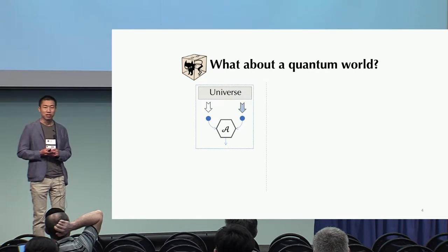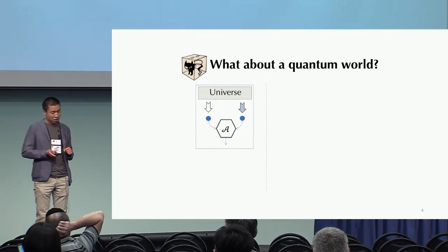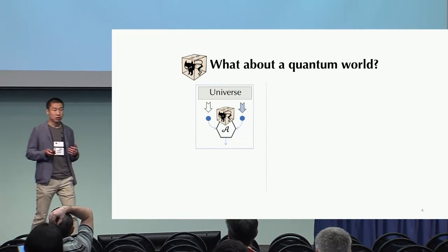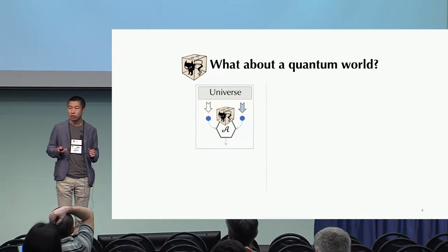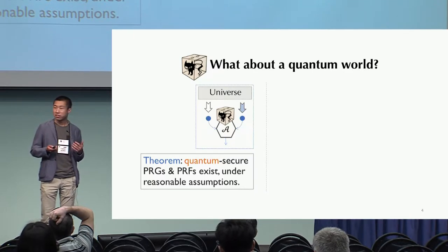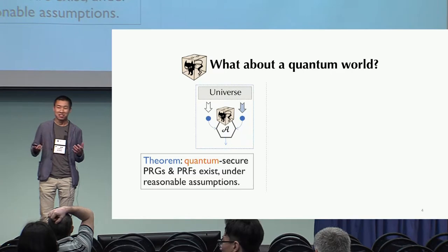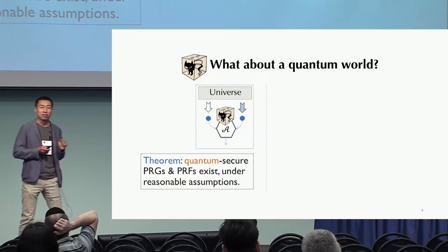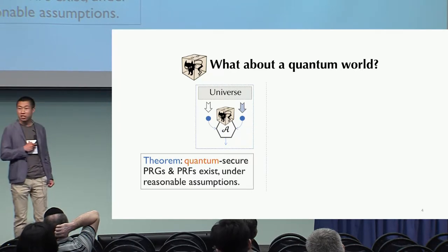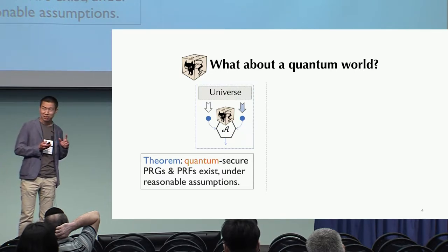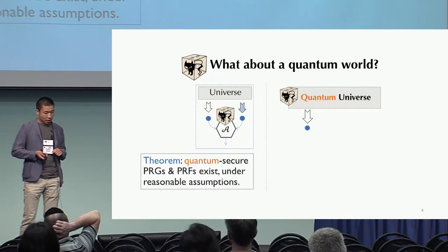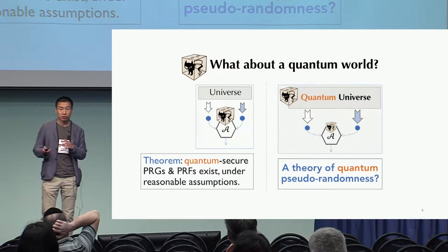So far so good, but the question we ask in this work is, how about a quantum world? What happens? So one could ask, what if the observer, which is the attacker in this setting here, becomes capable of quantum computing? So are those pseudorandom objects still secure? So this is a very important question and has received quite a bit of research. And I think it's safe to say that there are pseudorandom generators and pseudorandom functions which we believe to be quantum secure under reasonable assumptions. But notice that this side of the question only considers the attacker being quantum. But there is another element in this picture which can change in a quantum world, that is the universe. We might want to sample from a quantum universe, instead of just the classical objects like strings or functions.